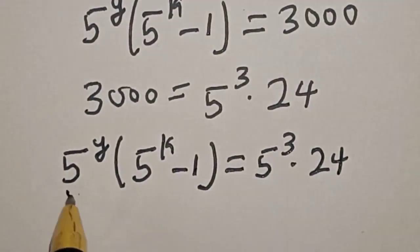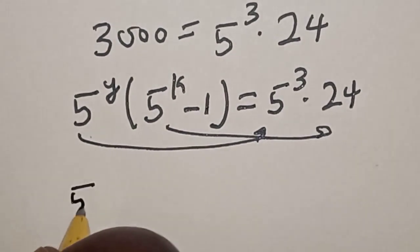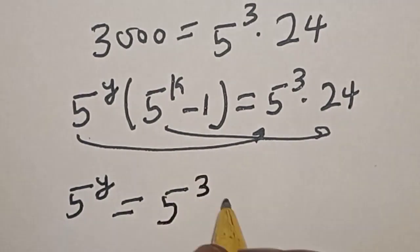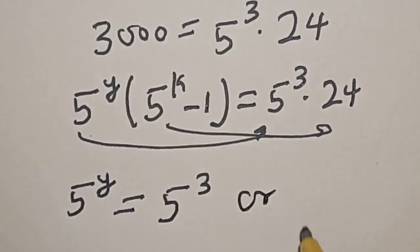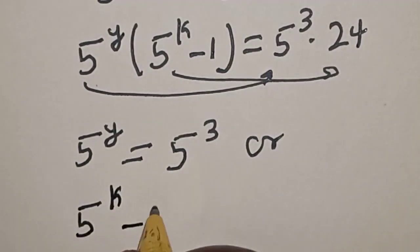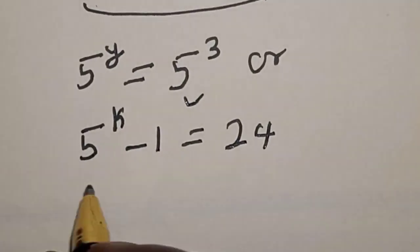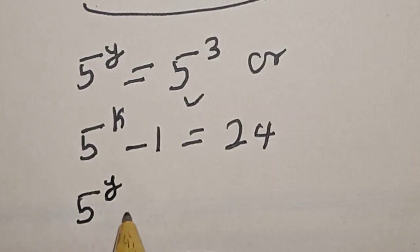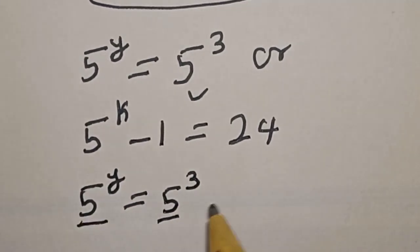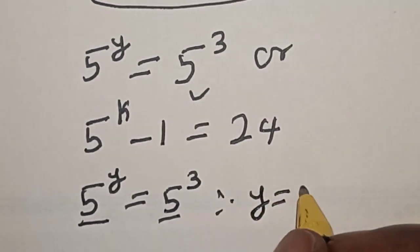Now, let's compare the left side to the right side. We have 5 raised to power y equal to 5 raised to power 3, and 5 raised to power k minus 1 equal to 24. From the first comparison, 5 raised to power y equals 5 raised to power 3. They have the same base, therefore y is equal to 3.